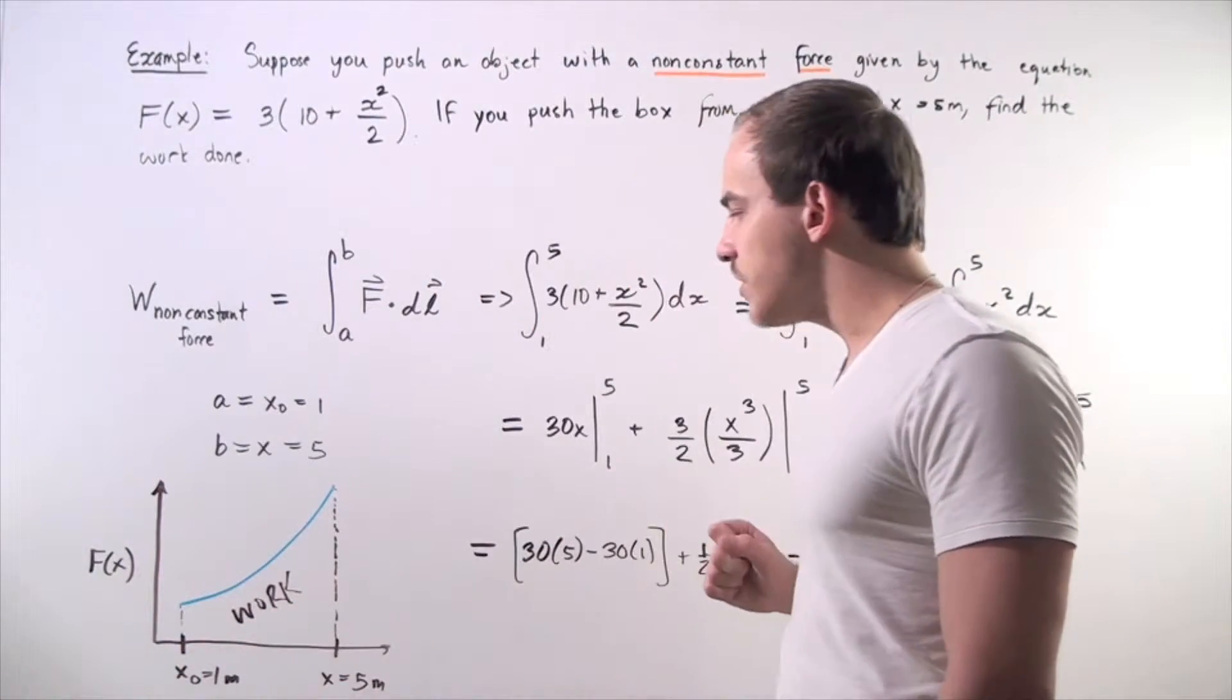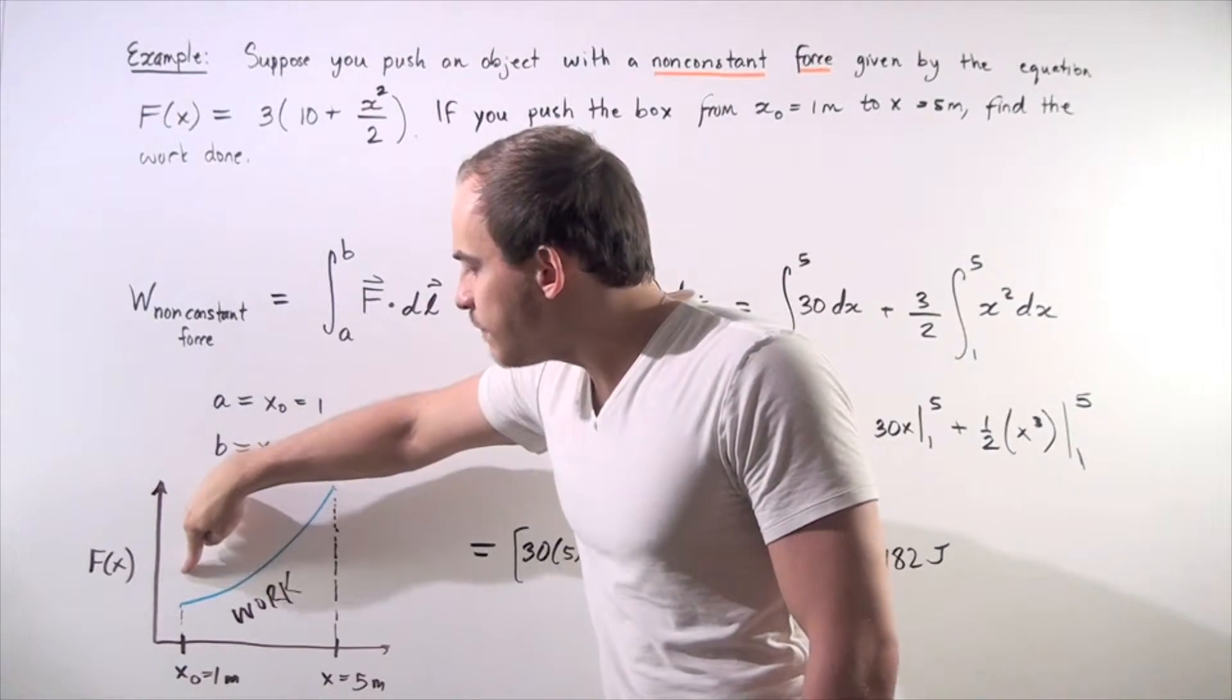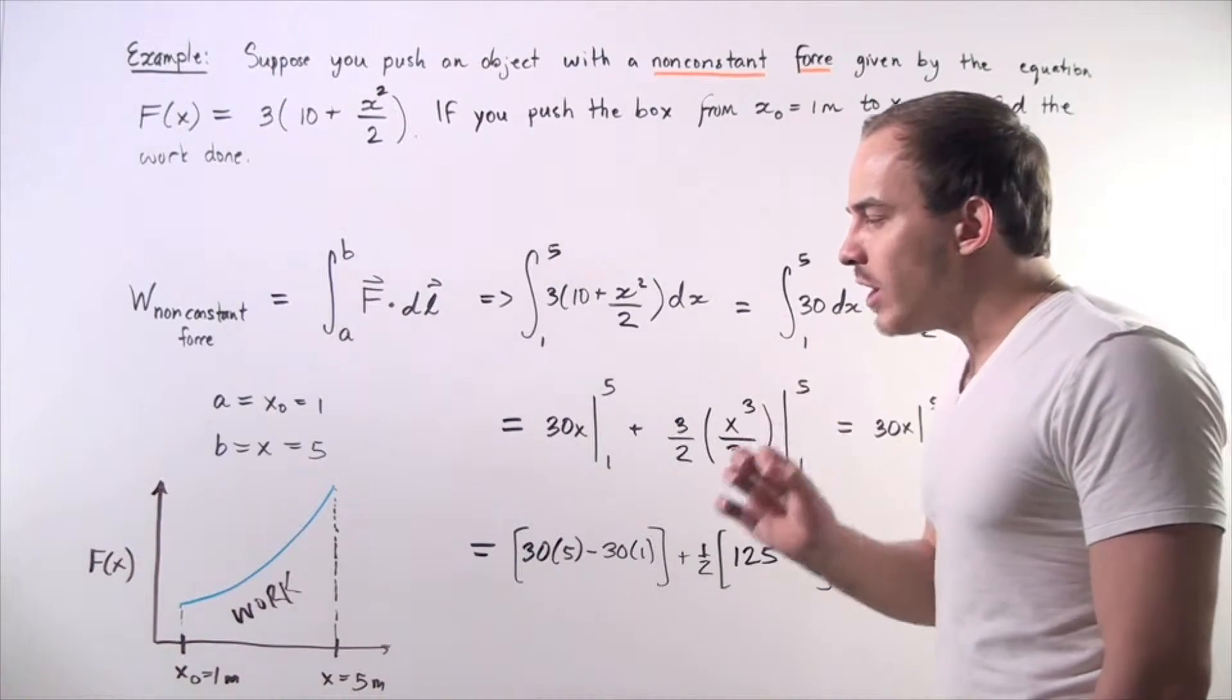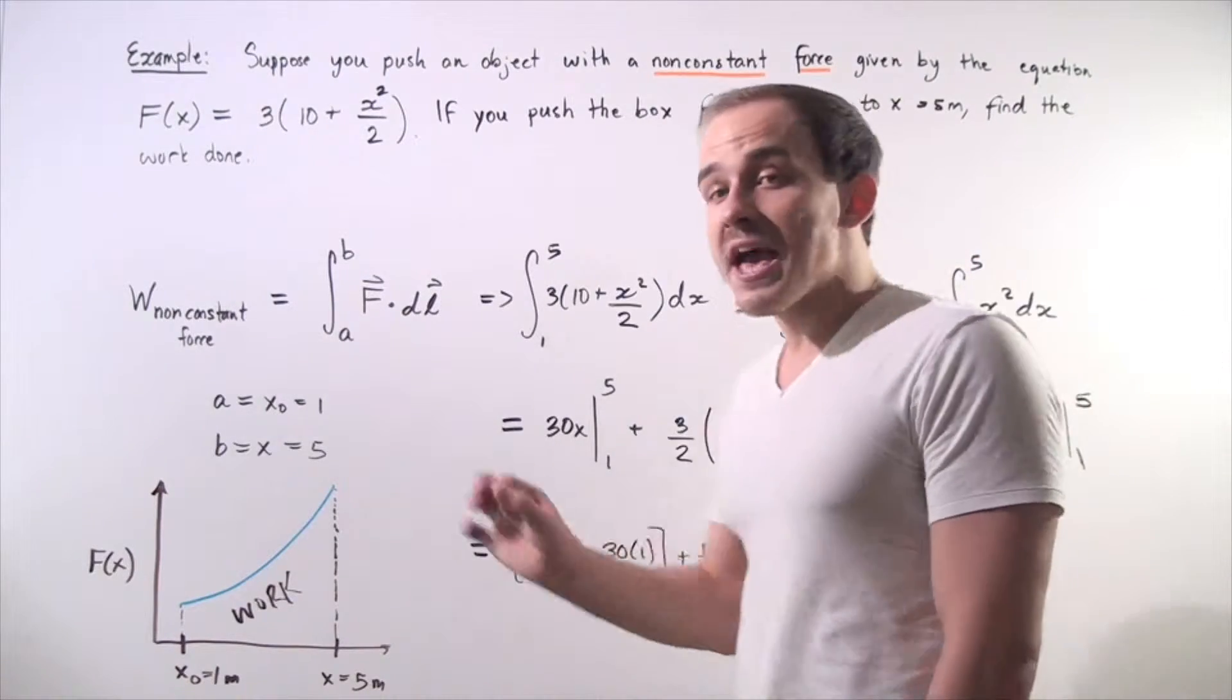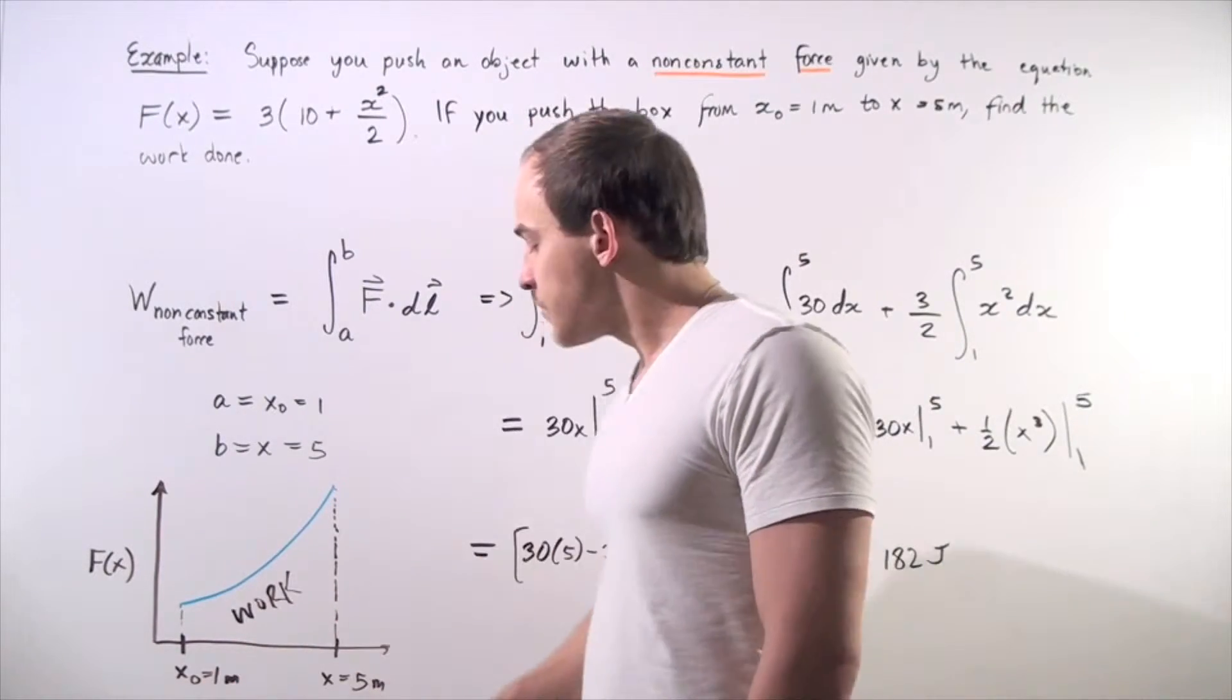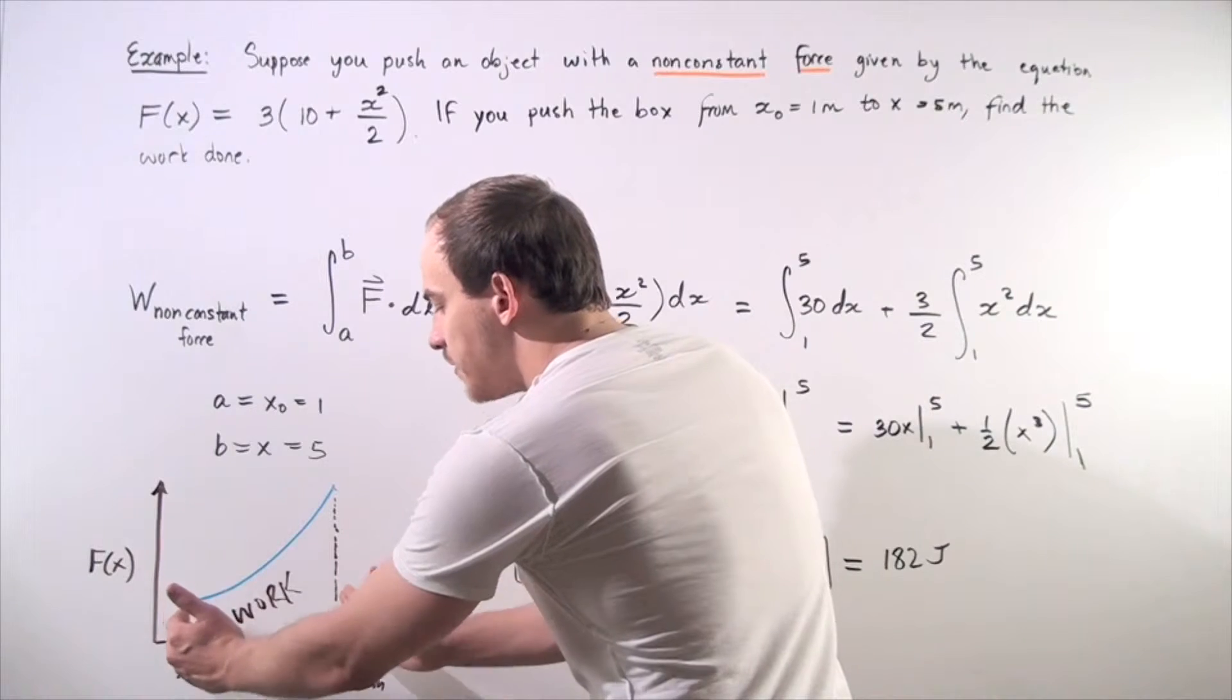As we move along the x-axis, our force increases in the following parabolic form. So, what we want to find is the area underneath the curve from 1 meter to the 5 meter position. We want to find this area.